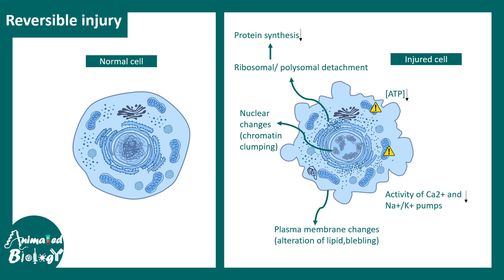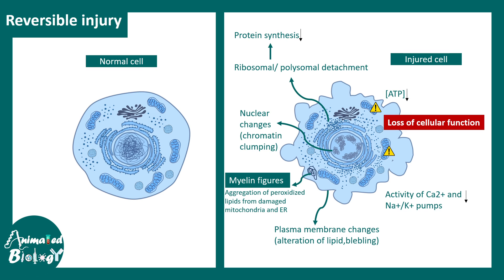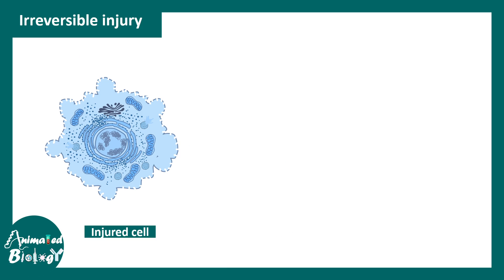One prominent microscopic feature is nuclear changes — the chromatin becomes clumped. Overall, all these cellular-level changes lead to compromised cellular function. Importantly, one can observe myelin figures in the cytosol: these are aggregated peroxidized lipids originating from damaged mitochondria or the endoplasmic reticulum.